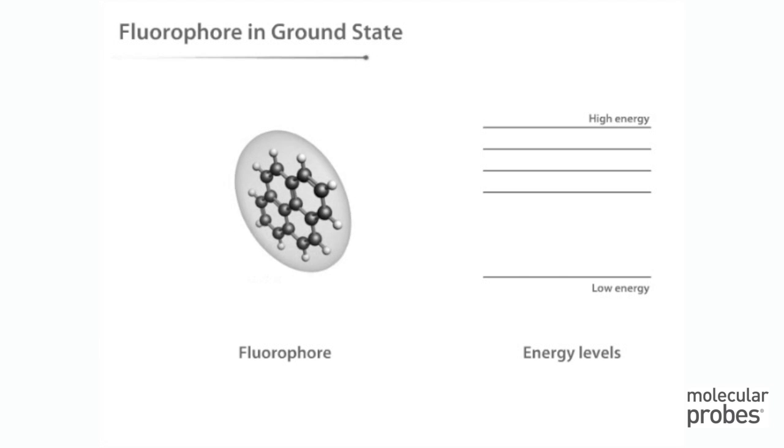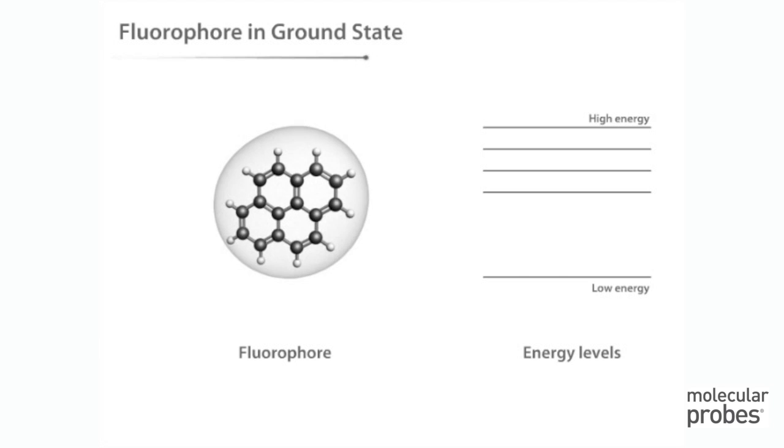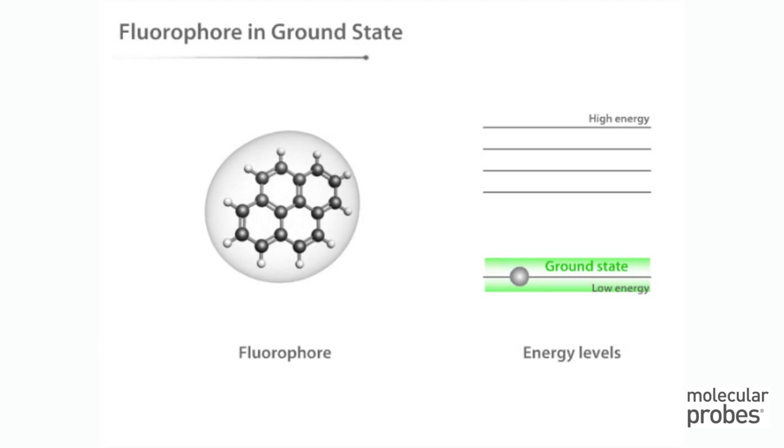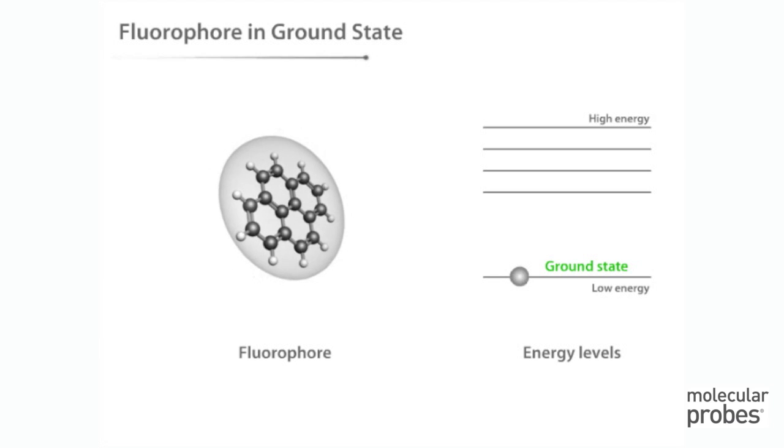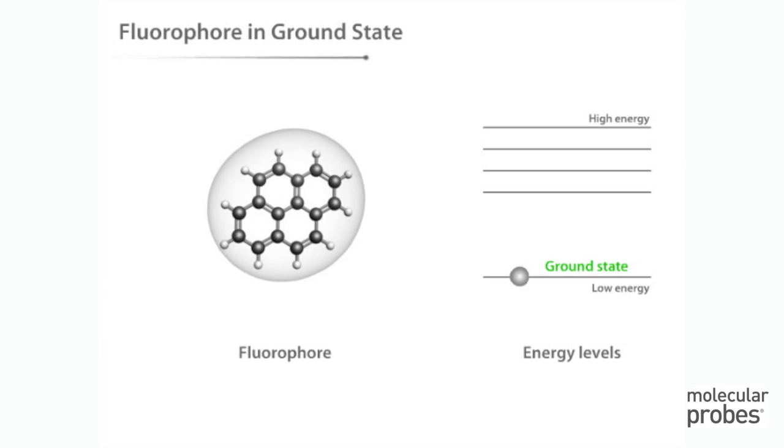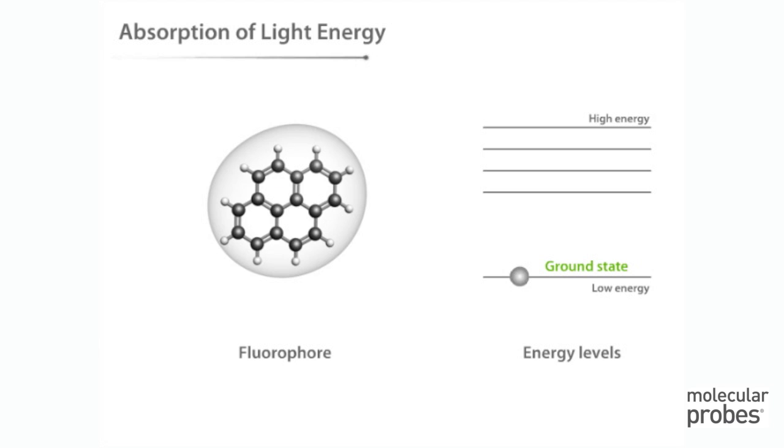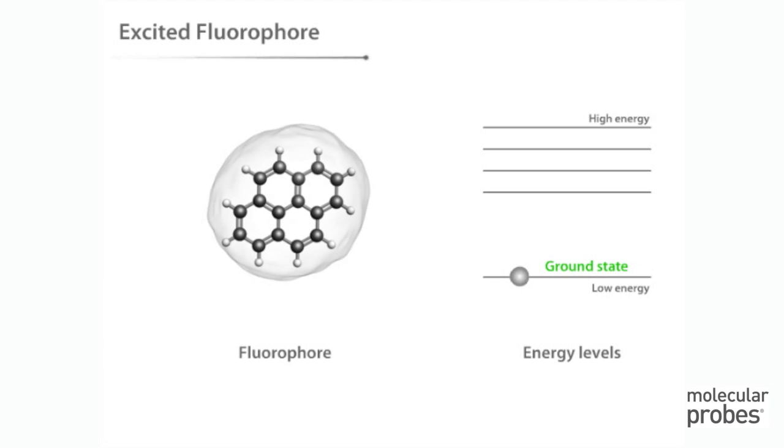A fluorophore is a molecule that is capable of fluorescing. In its ground state, the fluorophore molecule is in a relatively low-energy, stable configuration, and it does not fluoresce. When light from an external source hits a fluorophore molecule, the molecule can absorb the light energy. If the energy absorbed is sufficient, the molecule reaches a higher energy state, called an excited state.